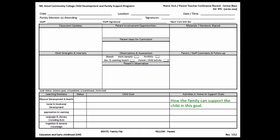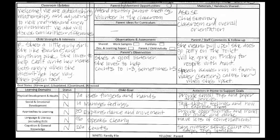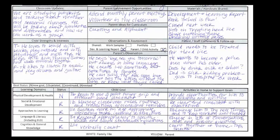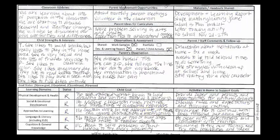Let's look at three excellent examples from one of our teachers in our program. Notice how she writes several examples in each section, makes sure to link the goals to TS Gold Objectives and identifies what objective that is, and writes very clear descriptive activities for the parents to follow.